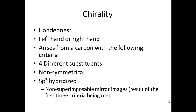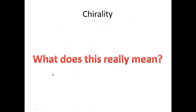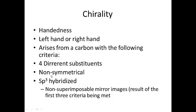A chiral center has four different substituents attached to it. It is non-symmetrical and also sp3 hybridized. As a consequence of these three things — four different substituents, asymmetry, and being sp3 hybridized — the mirror images of any molecule that's chiral are going to be non-superimposable.